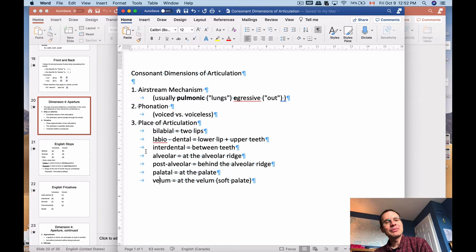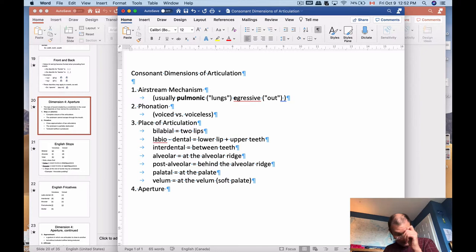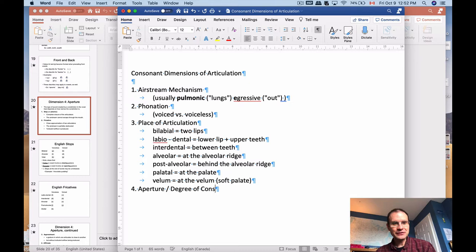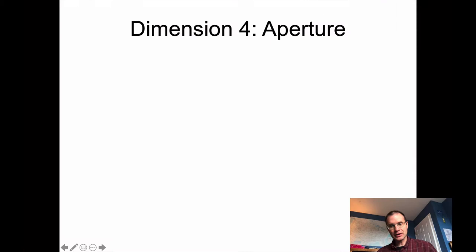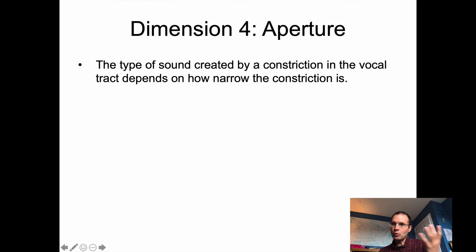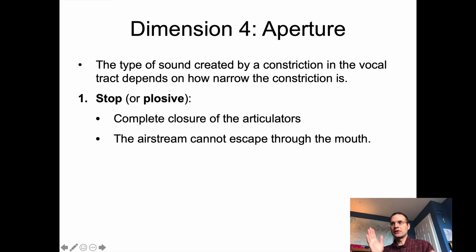The next one I'm going to talk about is aperture — that's what I call it. This is a bit idiosyncratic; other phoneticians don't really talk about it this way. A student once suggested the alternative term 'degree of constriction,' which works fine too. Basically, air comes up from your lungs, you either voice it or don't at your larynx, and then there's a question of how much you're going to constrict that airflow. So how wide or narrow is that constriction going to be? We'll walk through options from most narrow to most open.